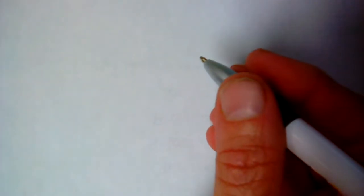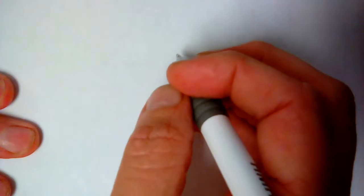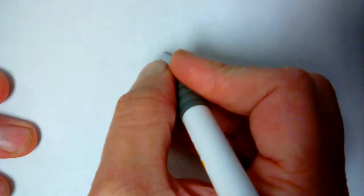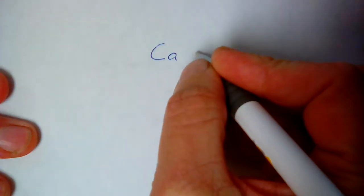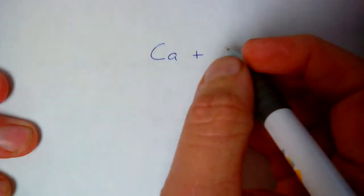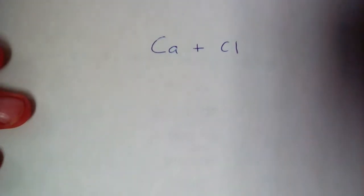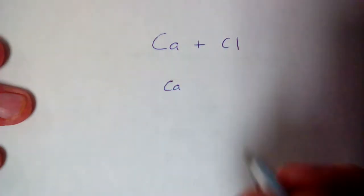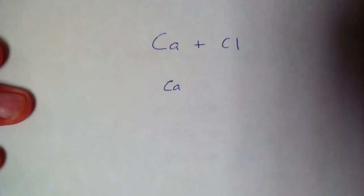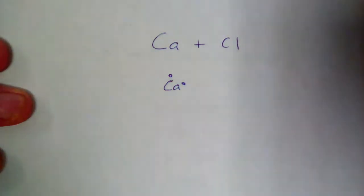In covalent bonding, it's a lot different than ionic. In ionic bonding, when we do Lewis structures and write formulas, I tell you what elements to use. So I say calcium and chlorine, and you do the Lewis structures, write everything out, and tell me what the formula is going to be. You start with the Lewis structures. Calcium is in group two, and because it has two valence electrons, we represent those with two dots around the calcium symbol.